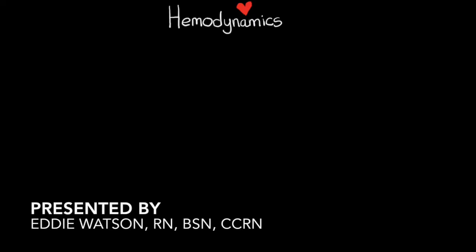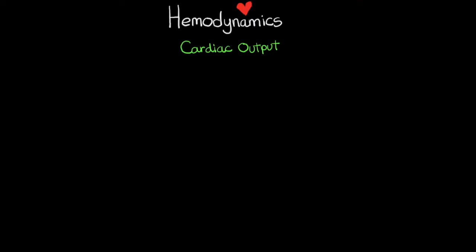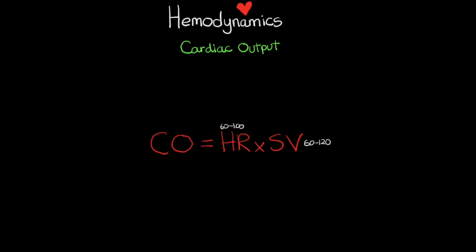Welcome back to our next lesson on hemodynamics. In this lesson we're going to be talking about cardiac output as well as the different factors that go into determining it. For a refresher, cardiac output equals heart rate times stroke volume. Normal stroke volume is 60 to 120, heart rate is 60 to 100, cardiac output is 4 to 8, and cardiac index is 2.5 to 4.